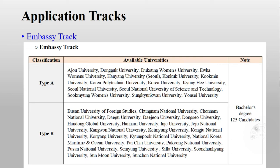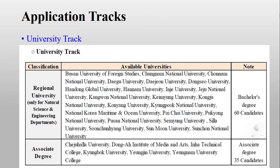For the University Track, they mention regional universities only for natural science and engineering departments. So you will find only natural science and engineering departments here — no other general departments. We will discuss each university in the coming videos.